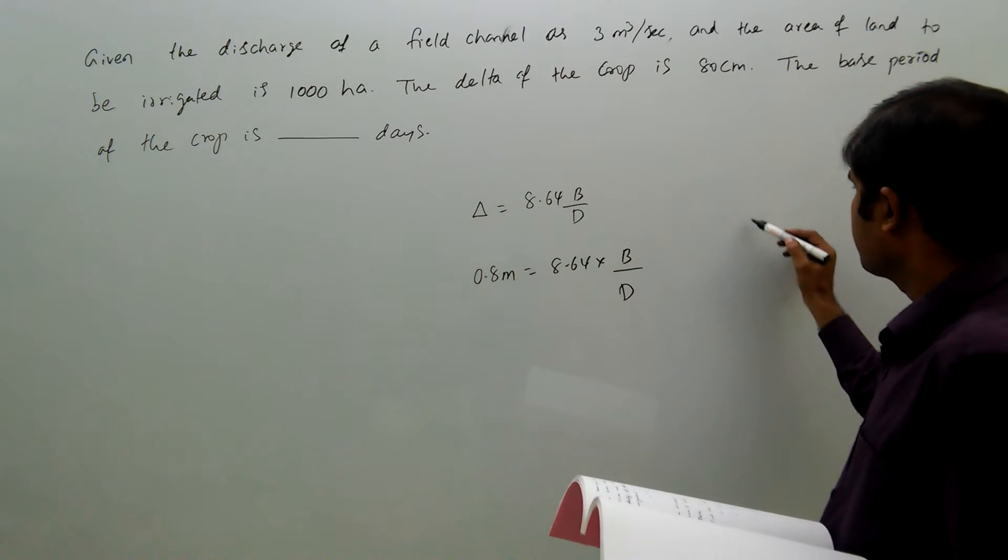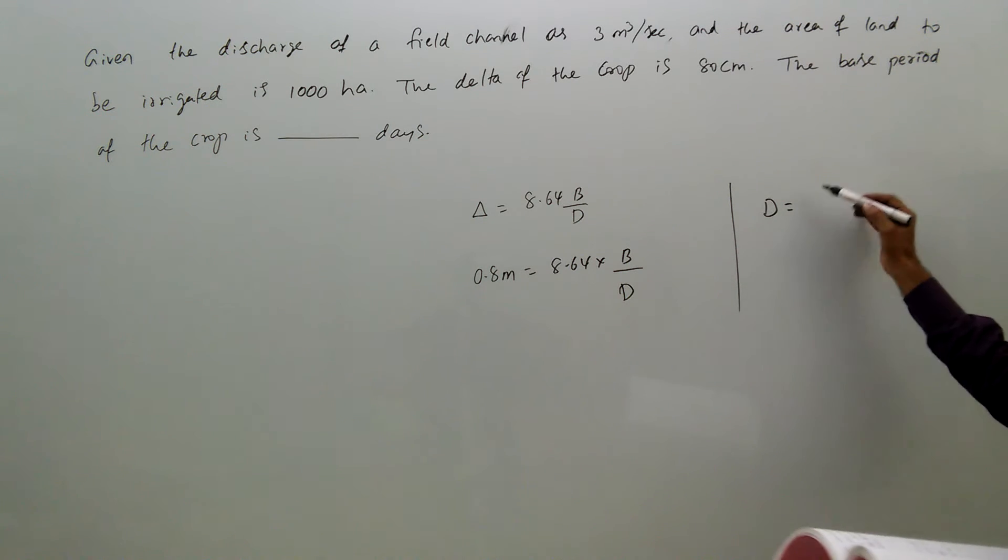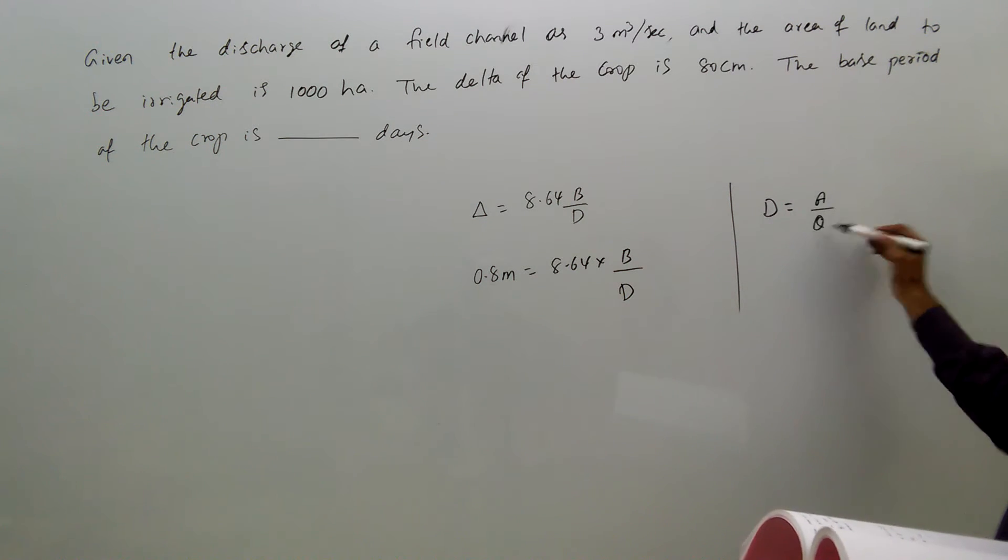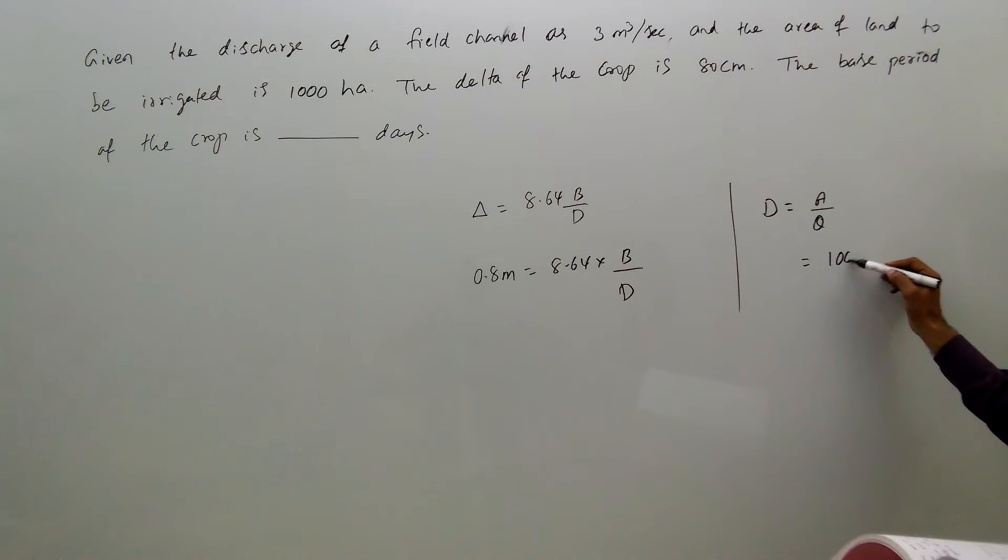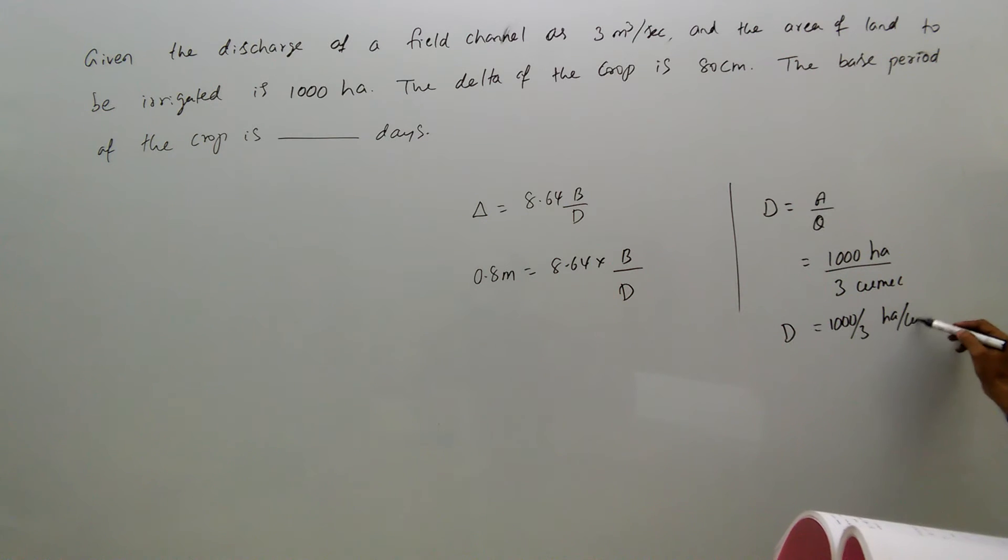But here, duty equals area by discharge, that is equal to area is 1000 hectares, discharge is 3 cubic meters. 1000 by 3, that is equal to D equals 1000 by 3 hectare per cubic meter.